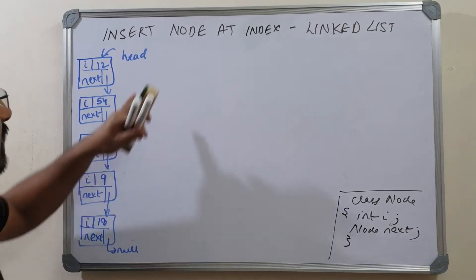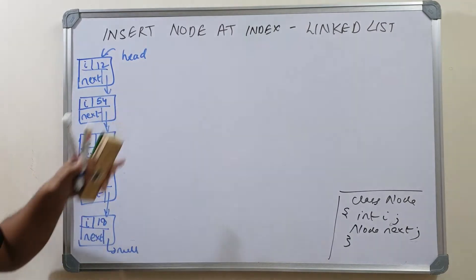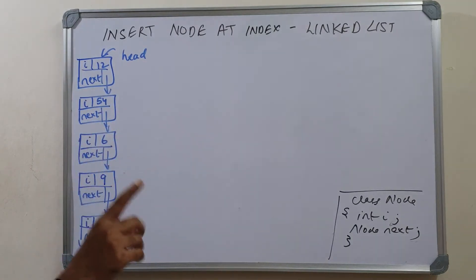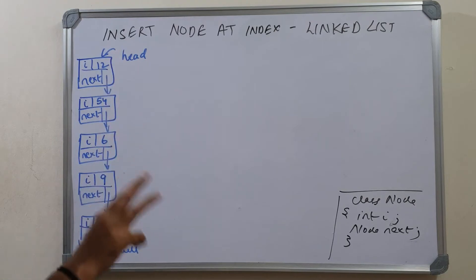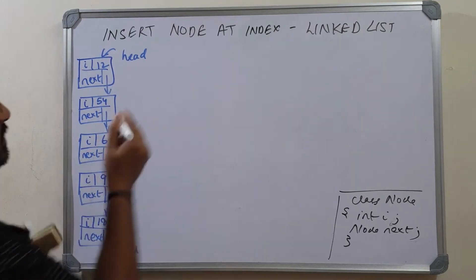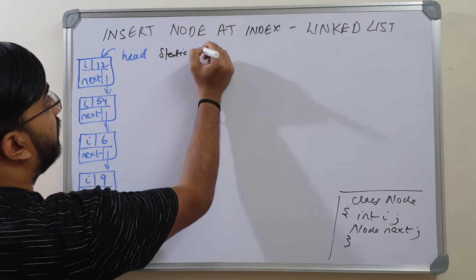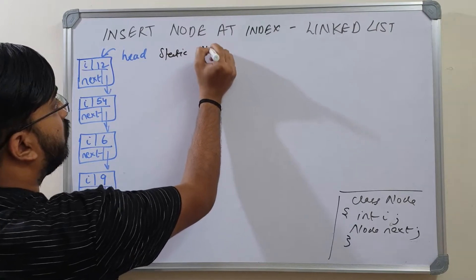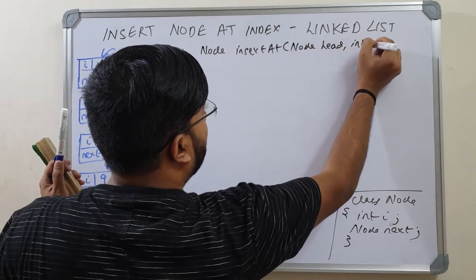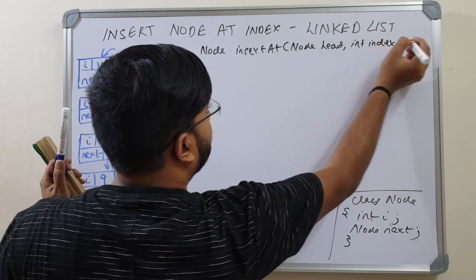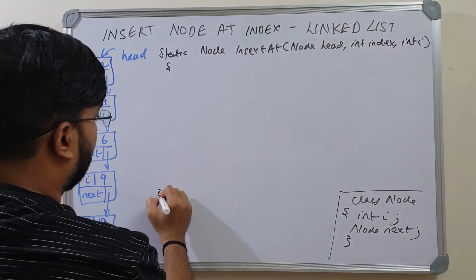We will add a method that takes the head of the linked list in which the new node is to be inserted, the index at which it is to be inserted, and the value that is to be inserted. So our method takes three arguments. The static node insert at takes the head, the index where this is to be inserted, and the value i which is to be inserted.